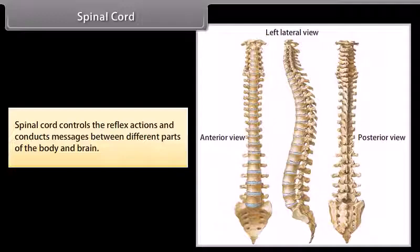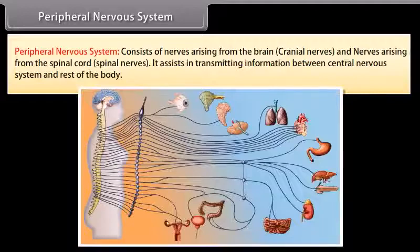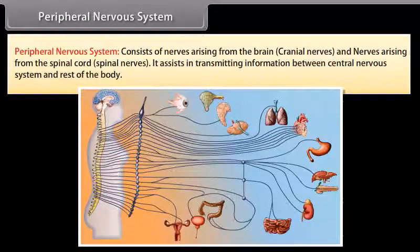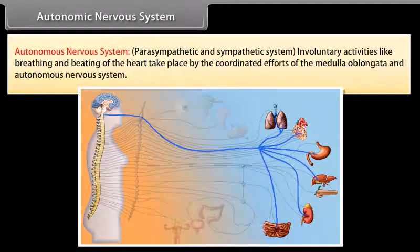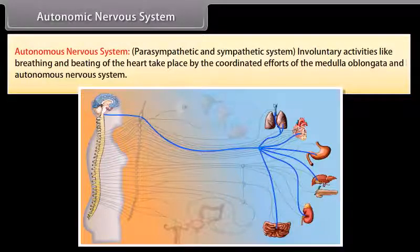The spinal cord controls reflex actions and conducts messages between different parts of the body and the brain. The peripheral nervous system consists of nerves arising from the brain (cranial nerves) and nerves arising from the spinal cord (spinal nerves). It assists in transmitting information between the central nervous system and the rest of the body. The autonomic nervous system includes parasympathetic and sympathetic systems. Involuntary activities like breathing and beating of the heart take place by the coordinated efforts of the medulla oblongata and the autonomic nervous system.